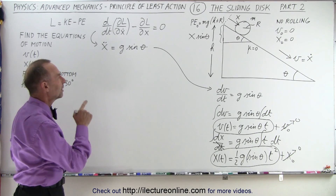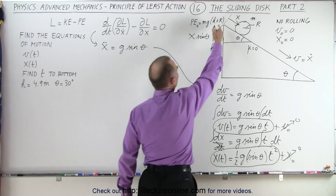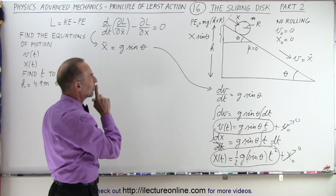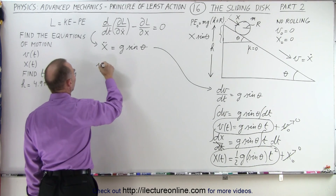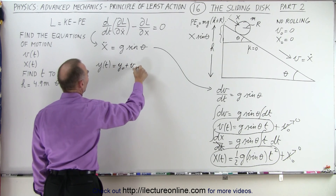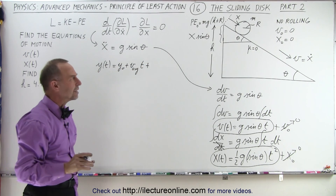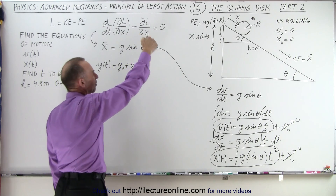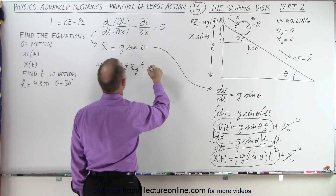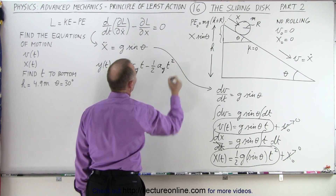Now what we want to do is find the velocity as a function of time or position as a function of time coming down straight vertically. We can say that y as a function of time — now we're looking at the vertical distance — is equal to y-naught plus v-naught in the y-direction times time, plus — or actually minus — one-half times the acceleration in the y-direction times t-squared.